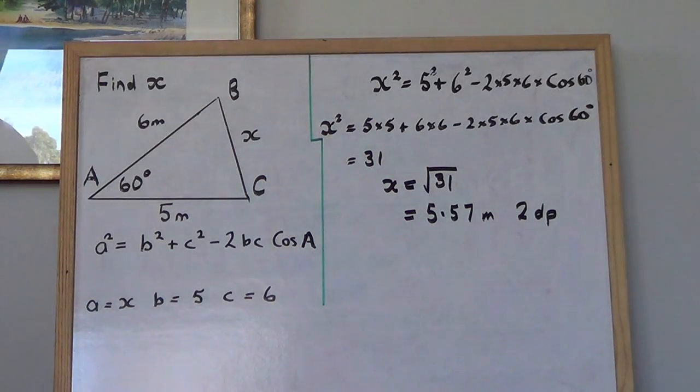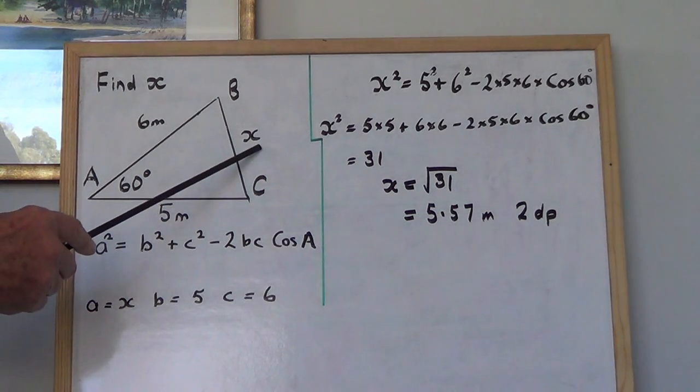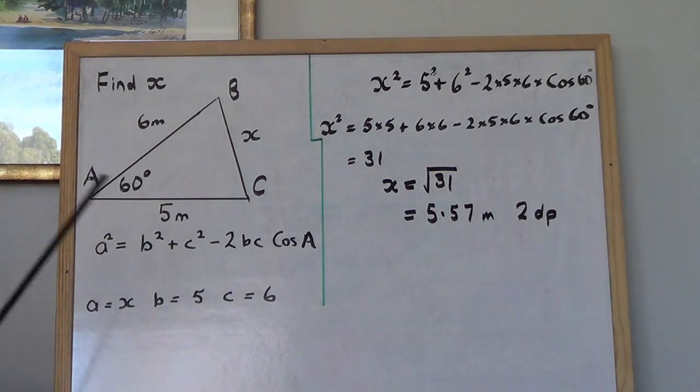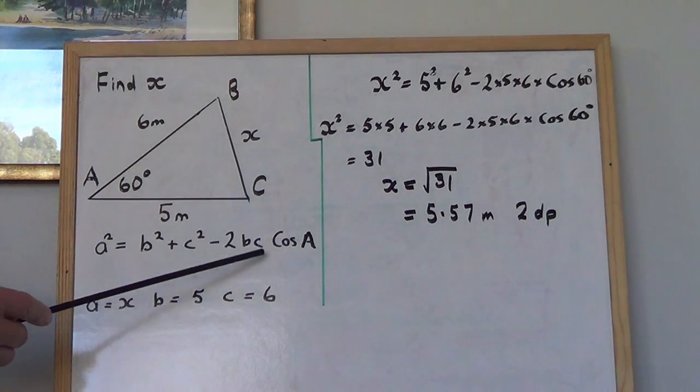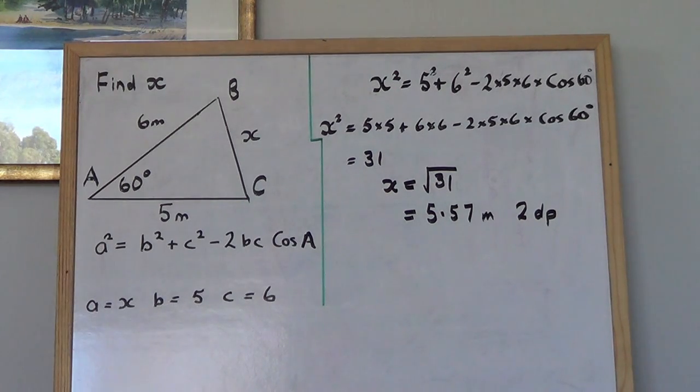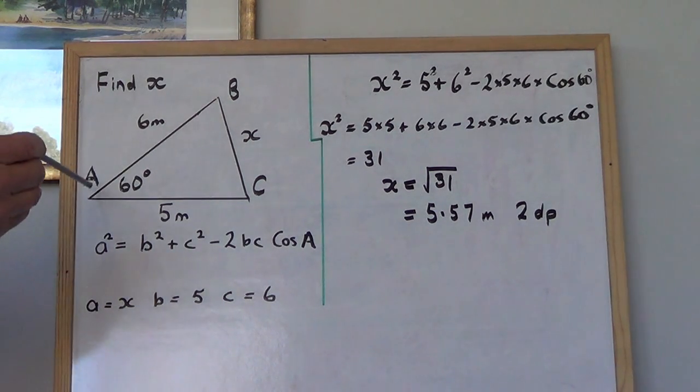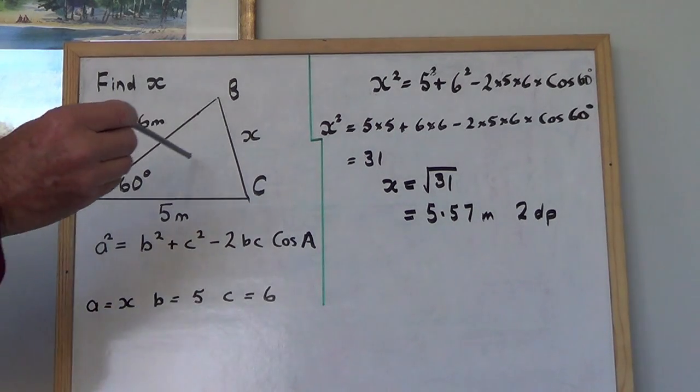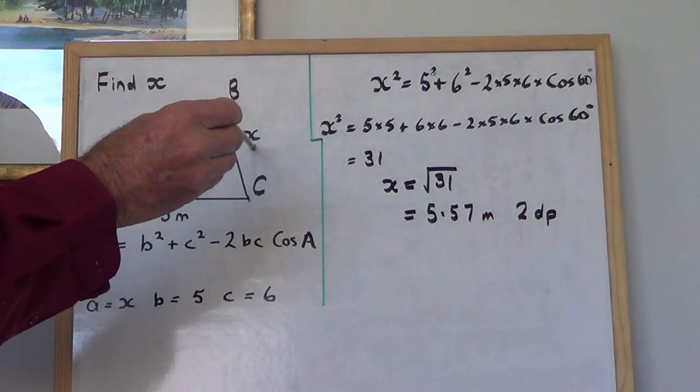Okay, first one we are finding x, that side there. Now the formula we're going to use is a squared equals b squared plus c squared minus 2bc times cos A. Well, first of all we're going to work out what a is. Now here's angle A. Opposite angle A is side a, so a is equal to x.